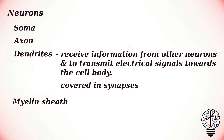The dendrites are the tree root-shaped part of the neuron, which are usually shorter and more numerous than axons. Their purpose is to receive information from other neurons and to transmit electrical signals towards the cell body. Dendrites are covered in synapses, which allow them to receive signals from other neurons. Some neurons have short dendrites while others have longer ones.